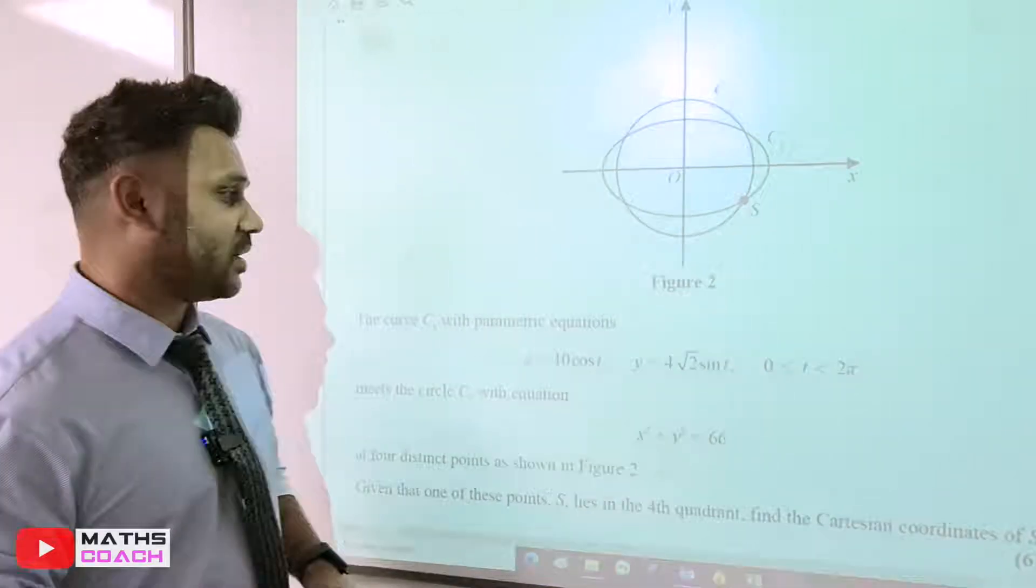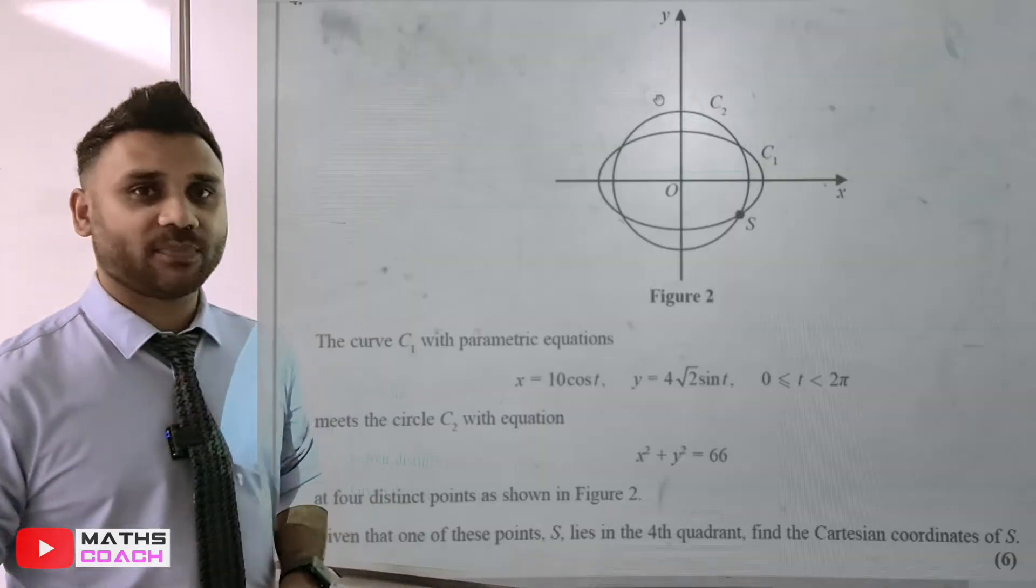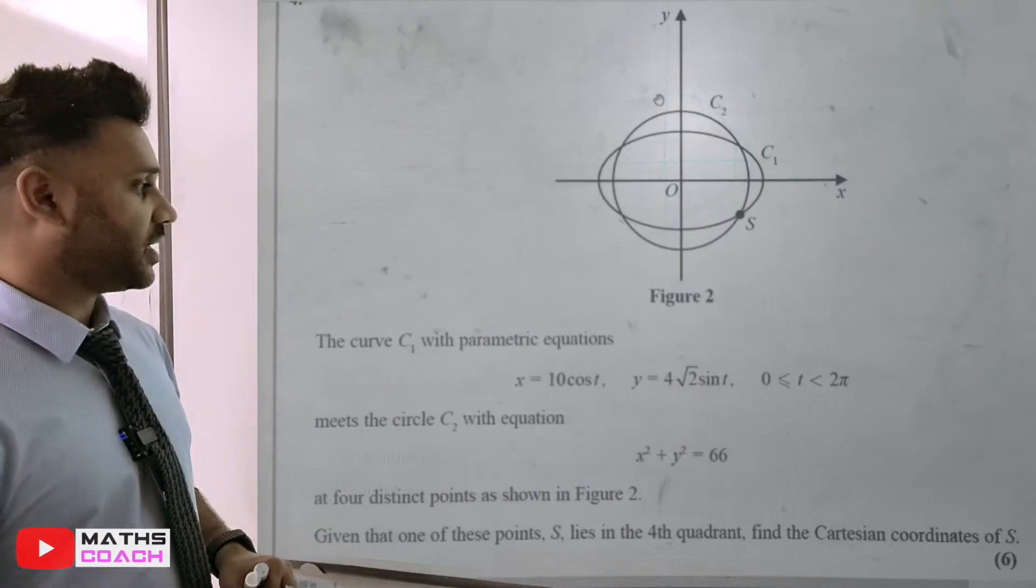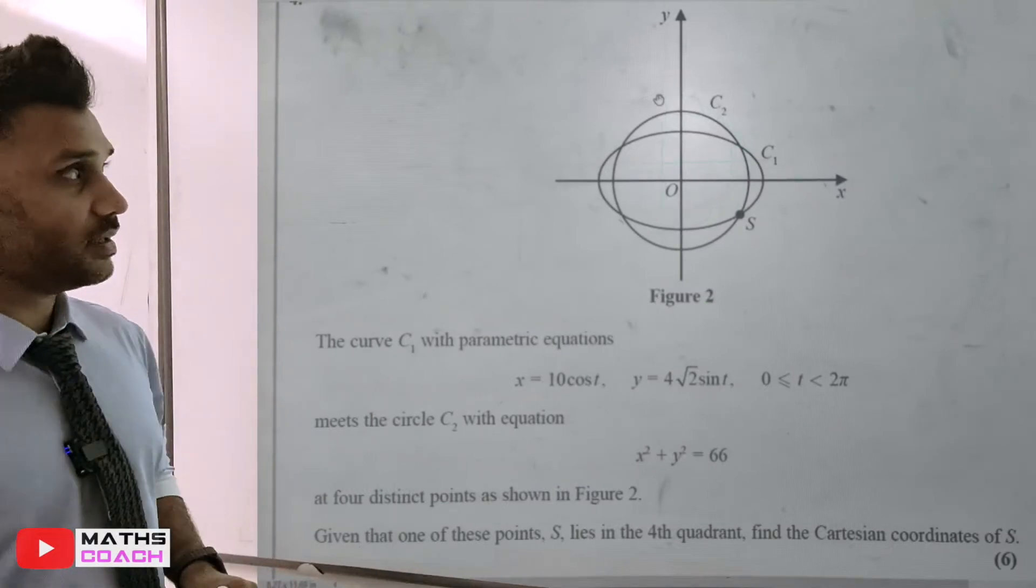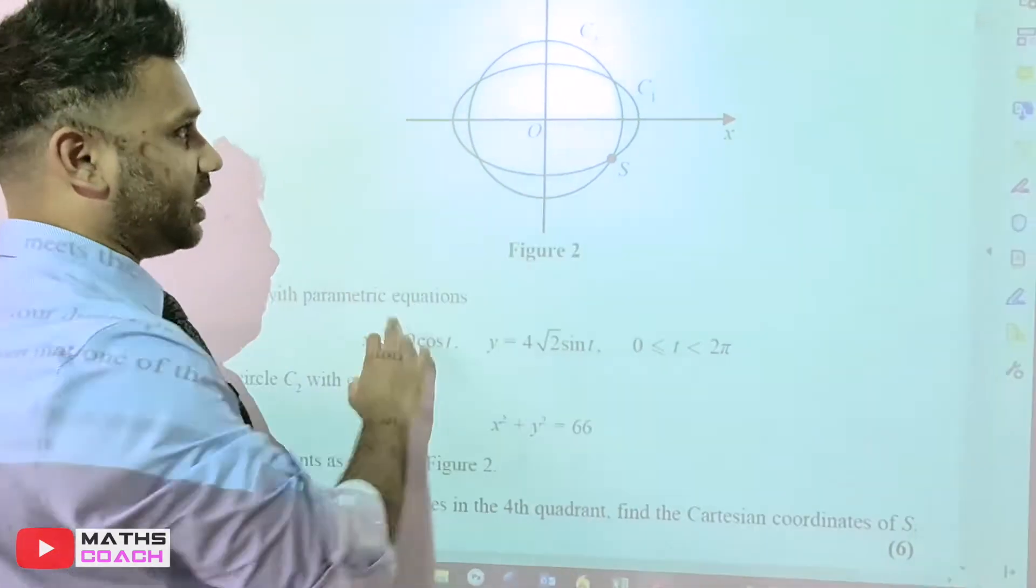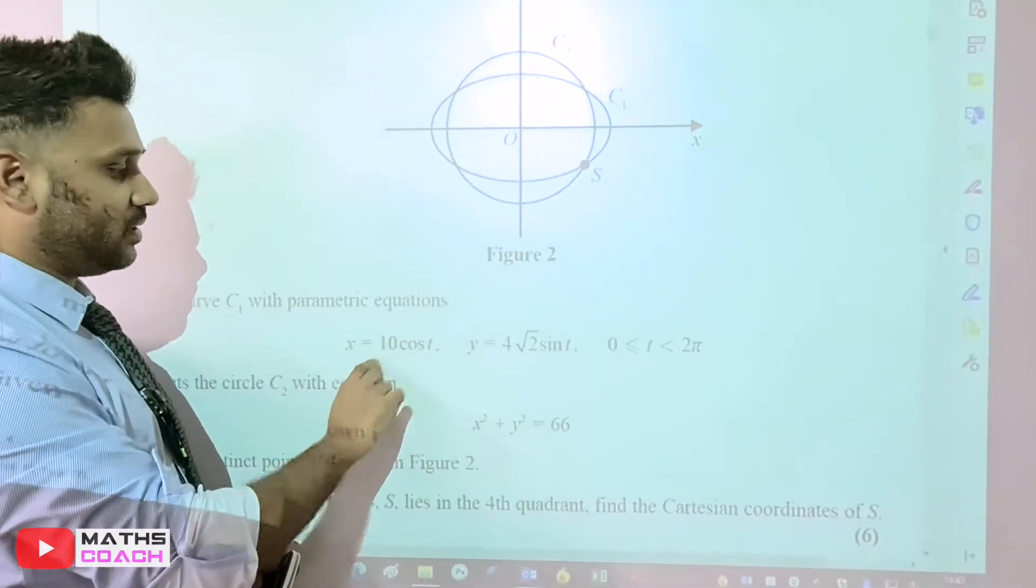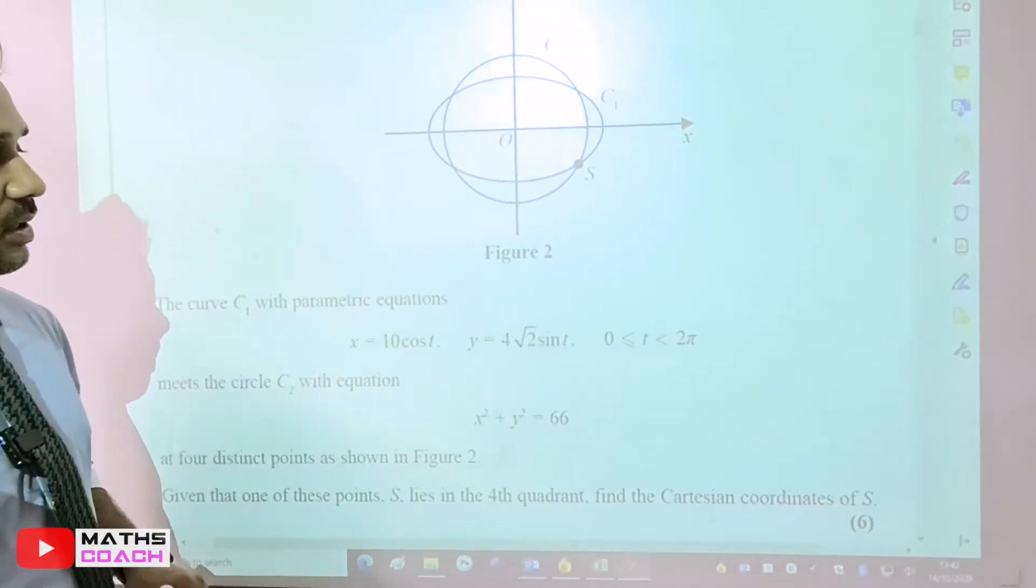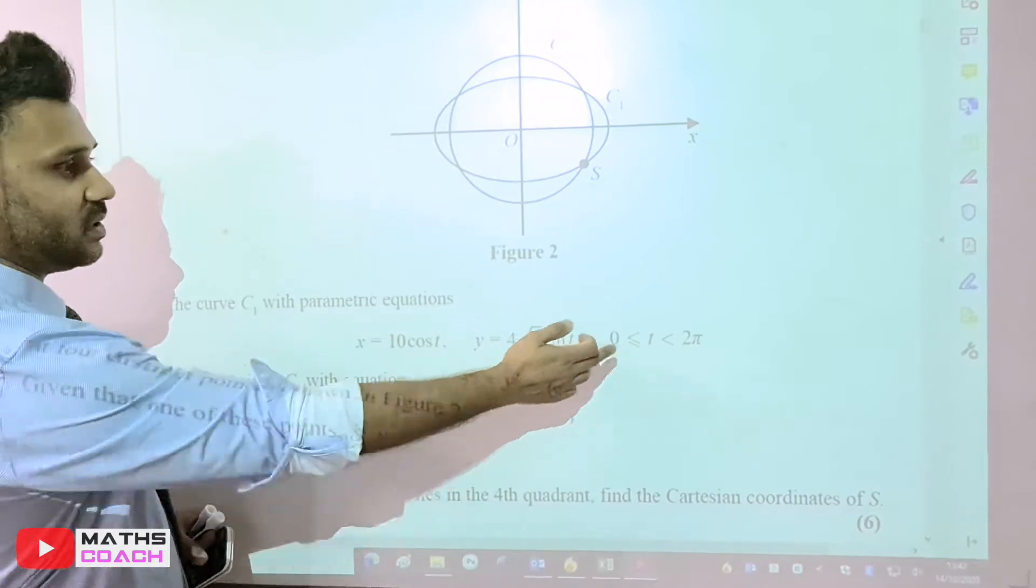Here's a question on parametric equations. It's from the PM2 exam paper in 2019. We have two curves C1 and C2. Curve 1 has an equation given parametrically as x equals 10 cos t and y equals 4√2 sin t, where t is between 0 and 2π.